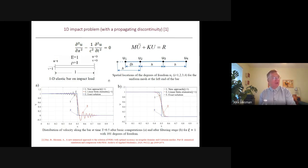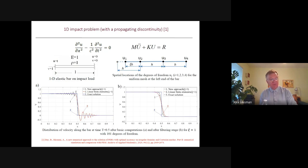We also applied our approach to problems with discontinuous solutions. Here we consider a 1D impact problem with moving discontinuity. We consider a one-dimensional bar with the scalar wave equation or one-dimensional elasticity equation. At the left end, we instantaneously apply velocity. For this problem, at time 0.5, we plot the velocity along the bar. The exact solution is piecewise constant. The numerical solution by the new approach is shown as the black curve, and for linear finite elements as the red curve — we have oscillatory results. But if we filter spurious oscillations, then the new approach yields much more accurate results than finite elements. Kf3 is the exact solution.